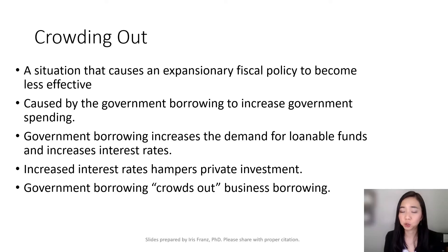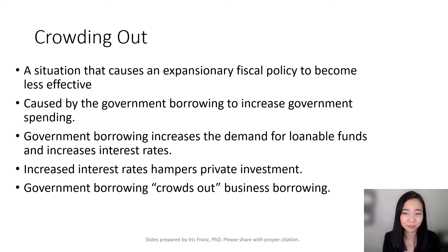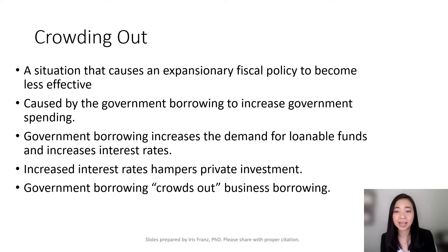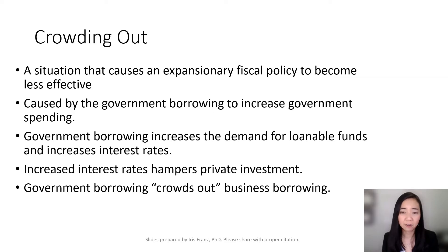Crowding out is a situation that causes an expansionary fiscal policy to become less effective. This occurs only when the government has to borrow to finance its increased spending. When the government does not have to borrow, there will be no crowding out.